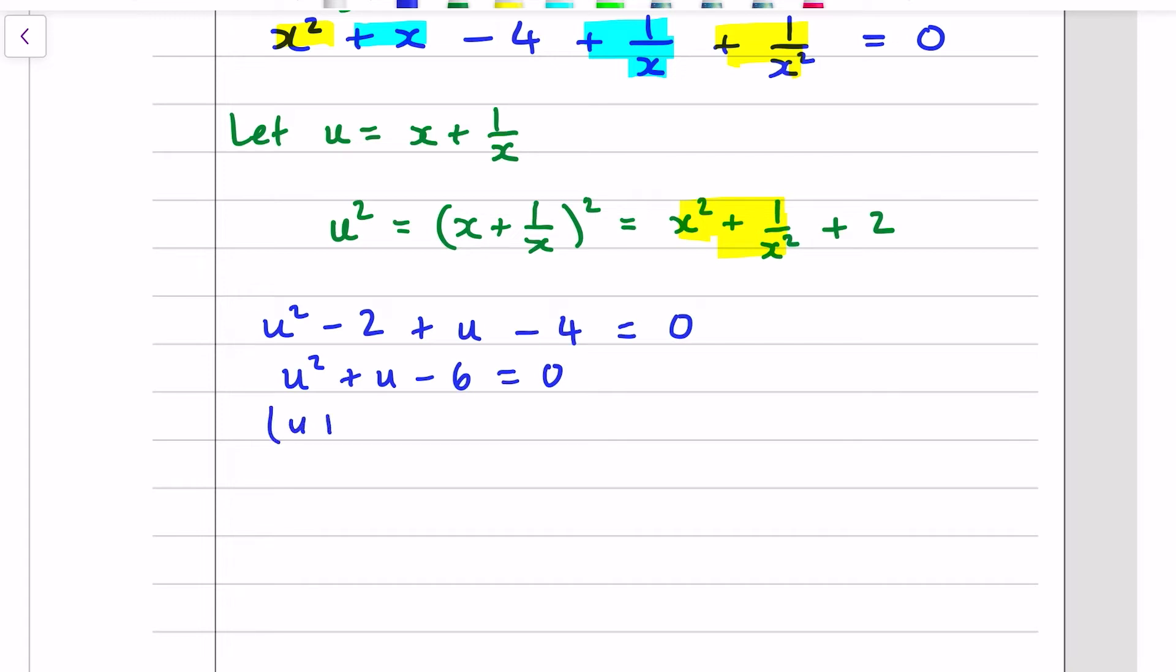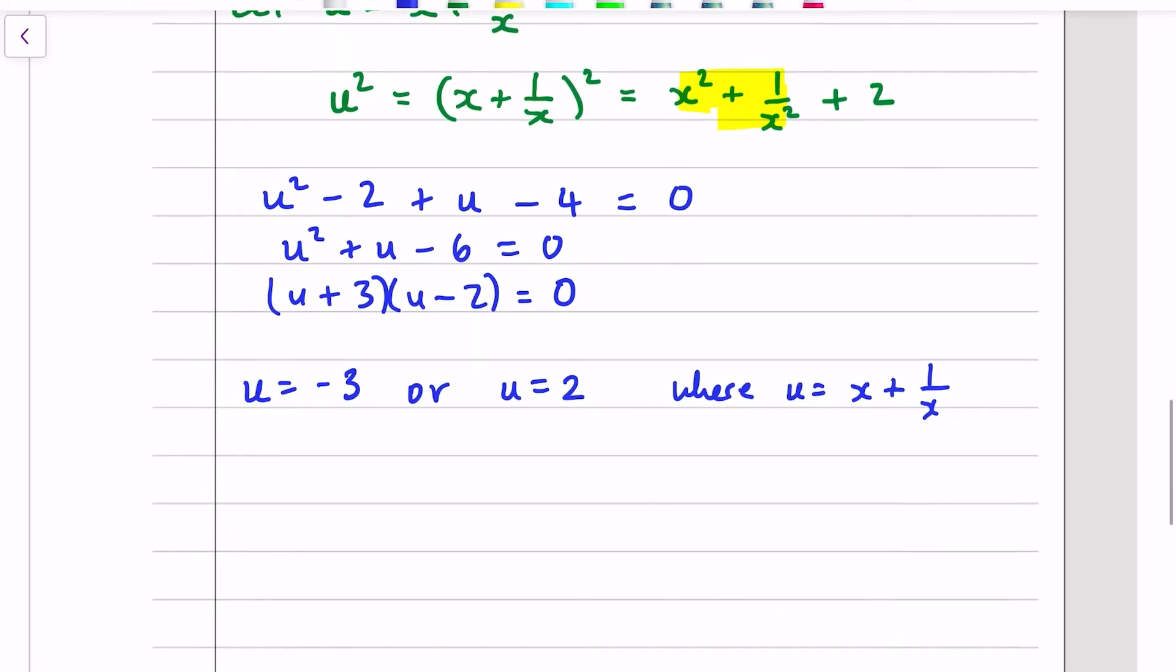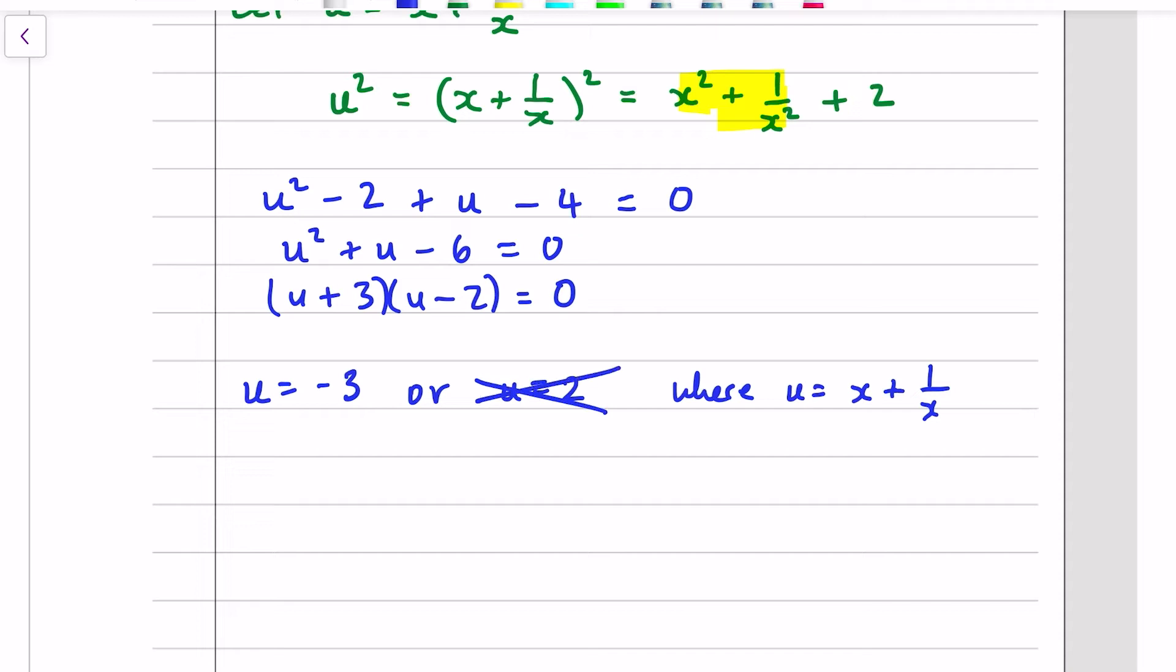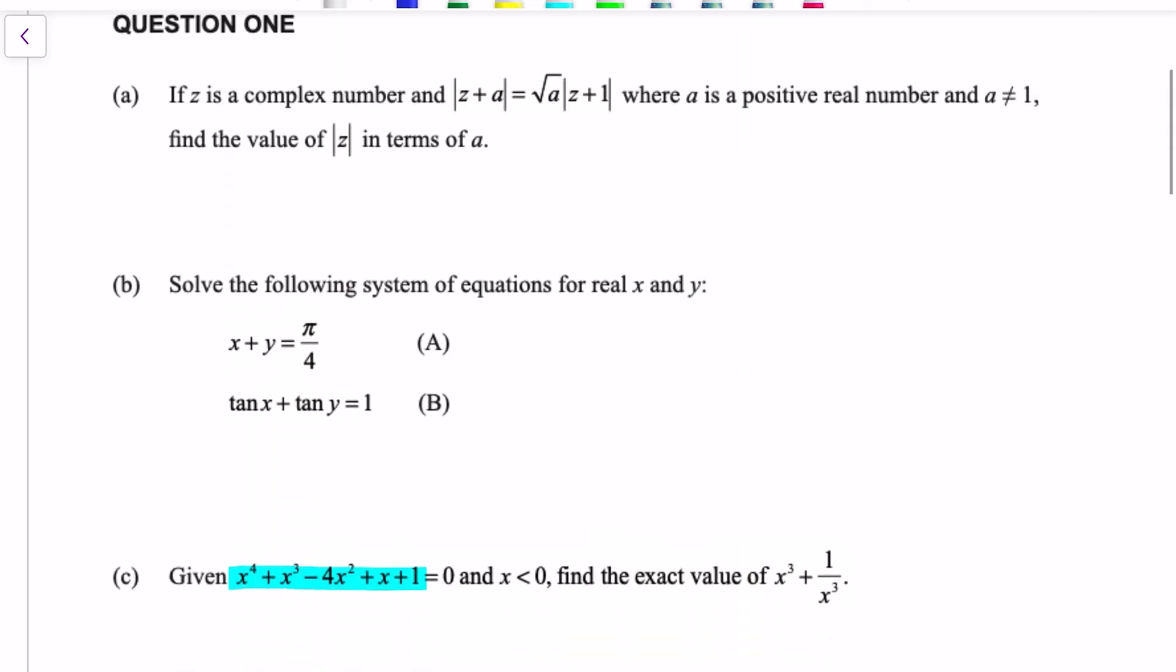We can factorise that in School if something factorises you know you're on the right track. u is equal to minus 3 or u is equal to 2 but remember that u is equal to x plus 1 over x and we're told that x is negative for this question. If x is negative then u must be negative as well. So we reject that one and we take that. And then we solve x plus 1 over x is equal to negative 3. Now we don't want to find x this question doesn't ask us to find what x is although that is a strategy that works. We are asked to find x cubed plus 1 over x cubed.